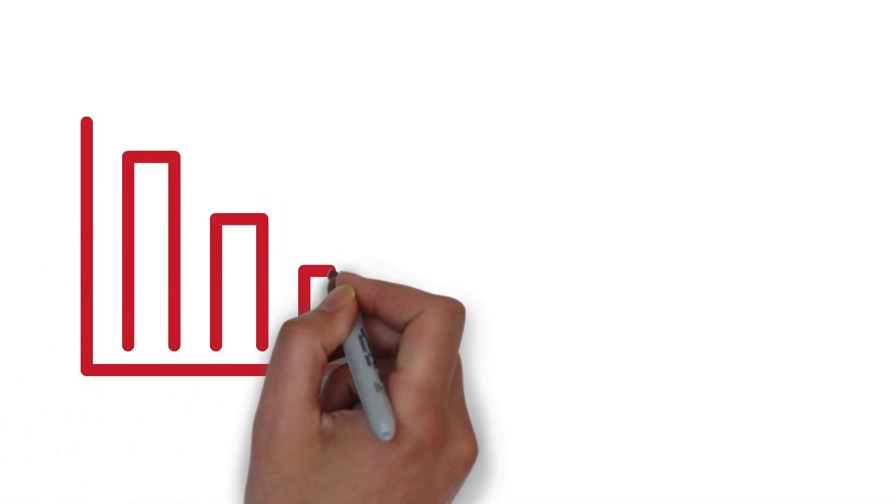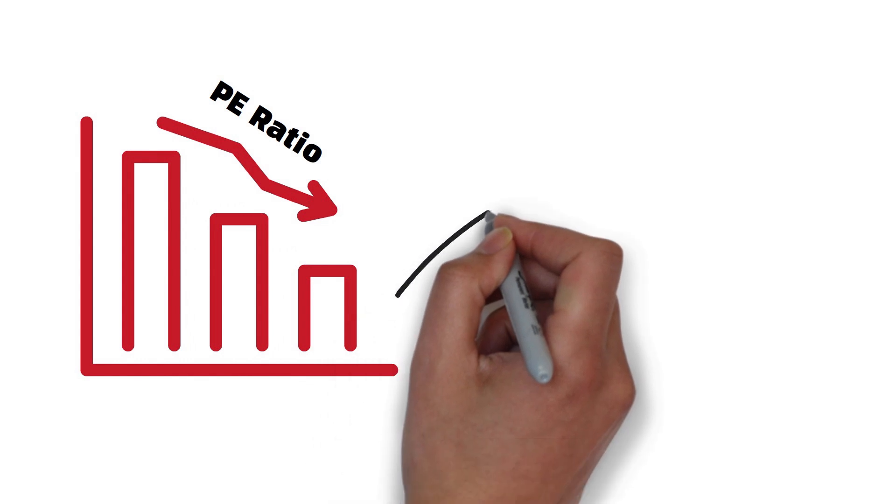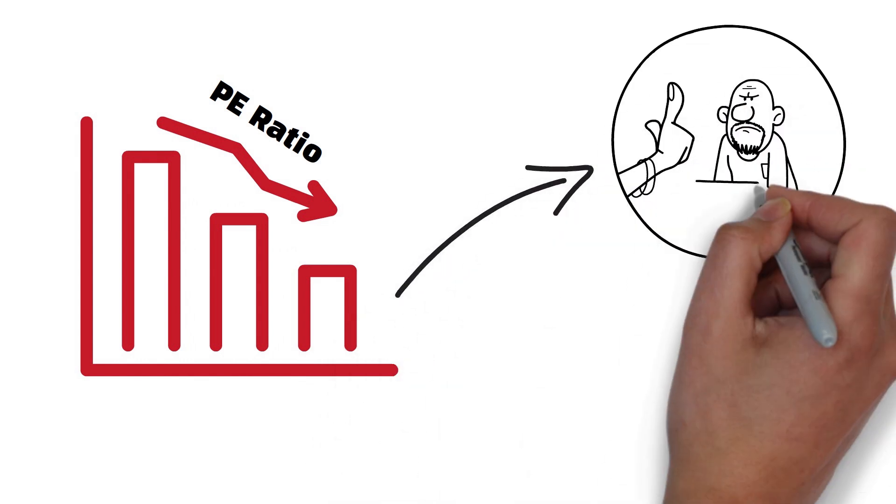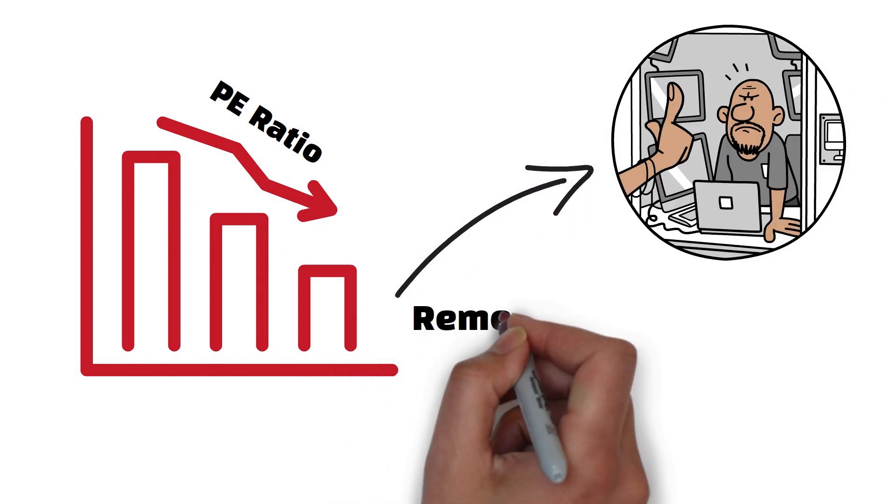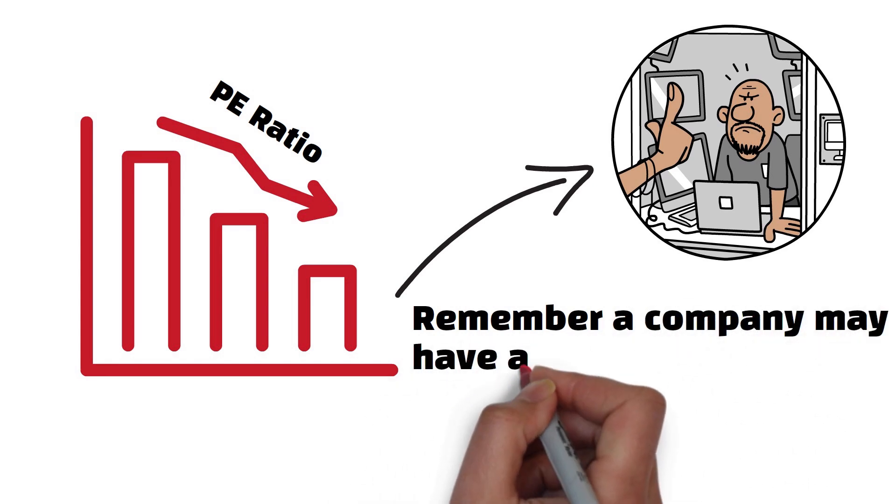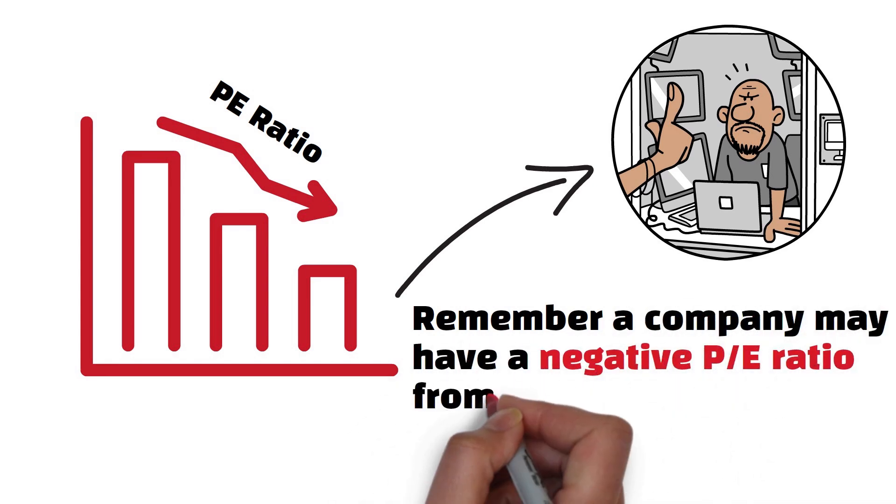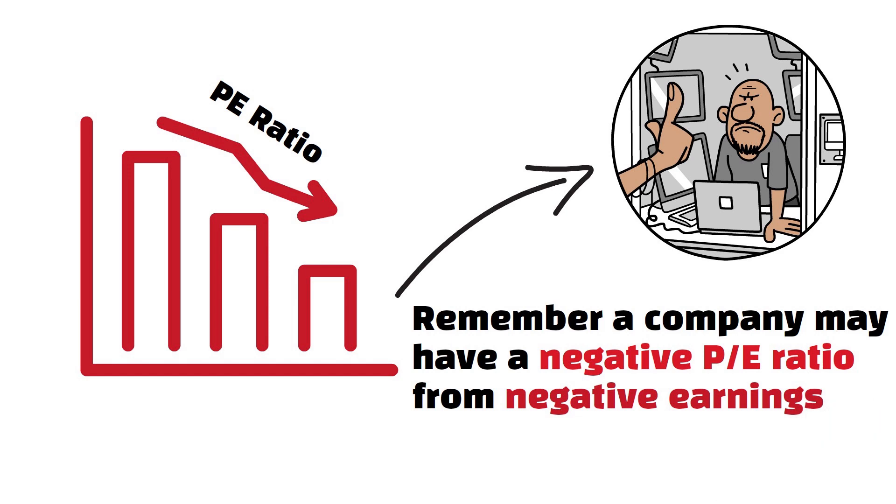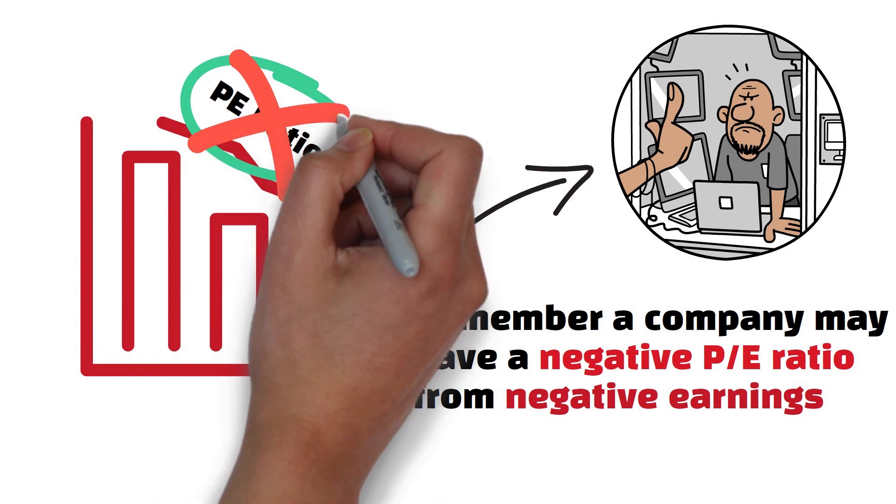A low P-E ratio could mean a stock is undervalued in the current market due to a terrible decision taken by executives, for example. It's important to remember that a company may also have a negative P-E ratio which can come from negative earnings. You should never rely only on the P-E ratio to make the decision for you.